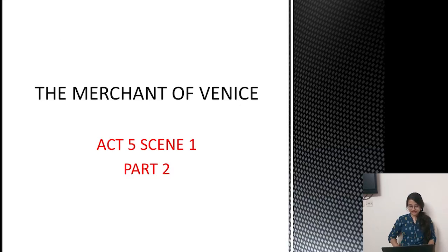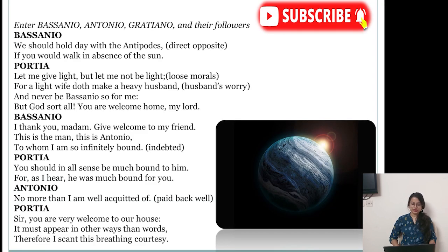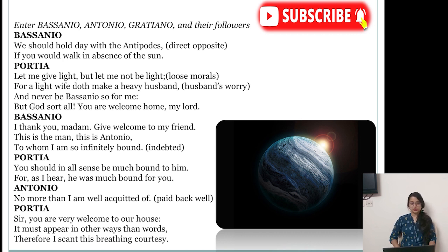The Merchant of Venice Act 5 Scene 1, Part 2. Enter Bassanio, Antonio, Graziano, and their followers. The first part requires memorizing a few references. From here it is very easy and simple. The sun should hold day with the antipodes — direct opposite — if you would walk in the absence of the sun.